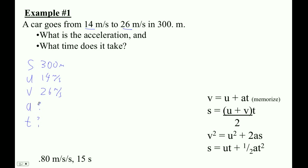Now, let's see. We want to find acceleration, so we need to, to find acceleration, we need to use the one that doesn't have T. So which one doesn't have T? This guy here, that guy has no T. So let's use that guy to find acceleration. So V squared is U squared plus 2AS. So the final velocity is 26 squared is equal to 14 squared plus 2 times A times 300.